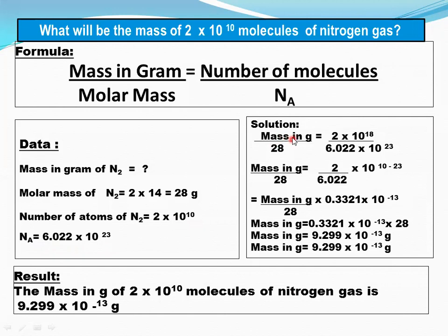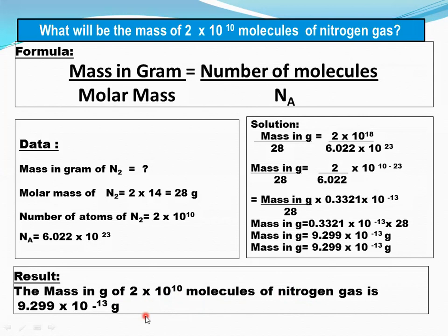Place the values into the formula: mass in grams divided by 28 equals 2 × 10¹⁰ divided by 6.022 × 10²³. Calculate the powers: 10¹⁰ divided by 10²³ = 10⁻¹³. Dividing 2 by 6.022 gives approximately 0.333. So we have 0.333 × 10⁻¹³. Shifting the molar mass to multiply: mass in grams = 0.333 × 10⁻¹³ × 28 = 9.324 × 10⁻¹³. So the mass of 2 × 10¹⁰ molecules of nitrogen gas is approximately 9.299 × 10⁻¹³ grams.